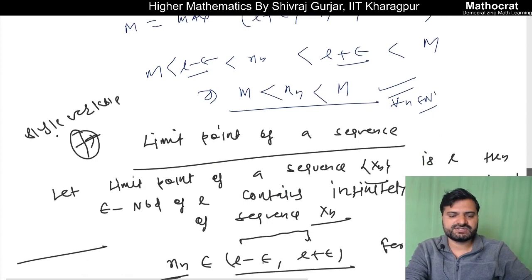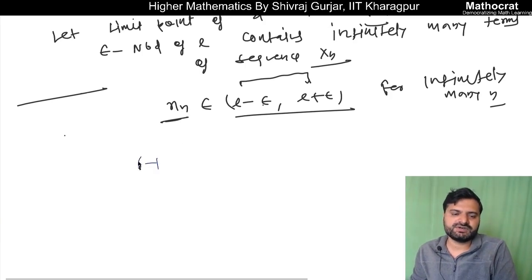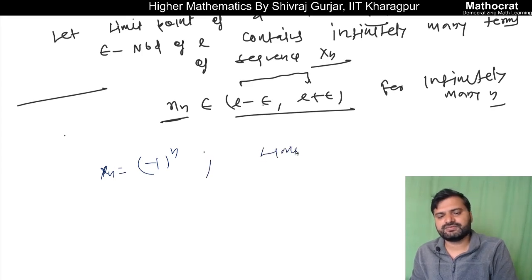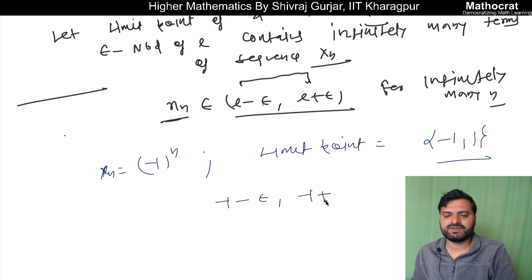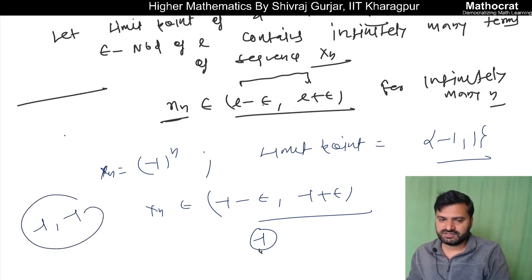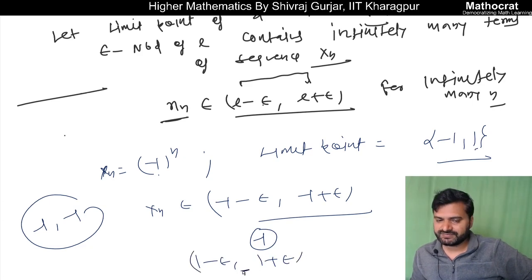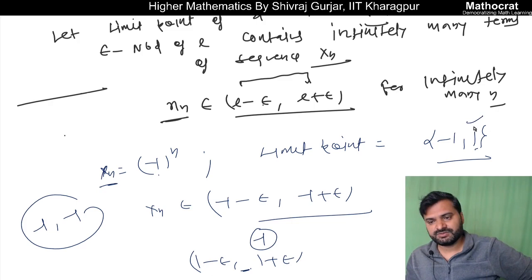Now for this sequence xn = (-1)^n, what are its limit points? The limit points will be minus 1 and 1. The reason is: for any epsilon-neighborhood of minus 1, i.e., the interval (minus 1 minus epsilon, minus 1 plus epsilon), xn belongs to it infinitely many times because minus 1 appears infinitely many times in the sequence. Similarly, for 1: between (1 minus epsilon) and (1 plus epsilon), the value 1 appears infinitely many times — whenever n is even, xn equals 1. So there are infinitely many n for which xn equals 1. Thus 1 is also a limit point.